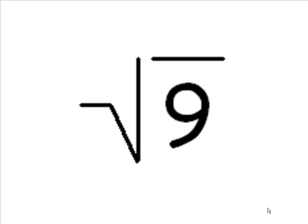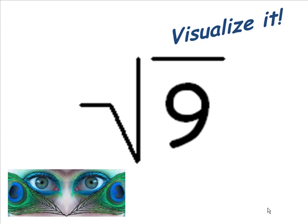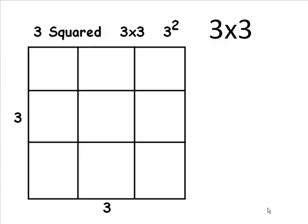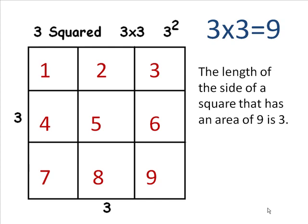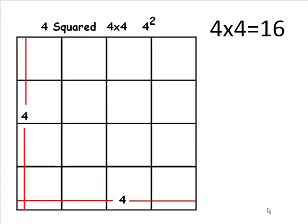But what is the square root of 9? Let's visualize it. 3 squared, or 3 times 3, equals 9 squares. The length of the side of a square that has an area of 9 is 3. The square root of 9 is 3, because the length of the side of the larger square is 3.